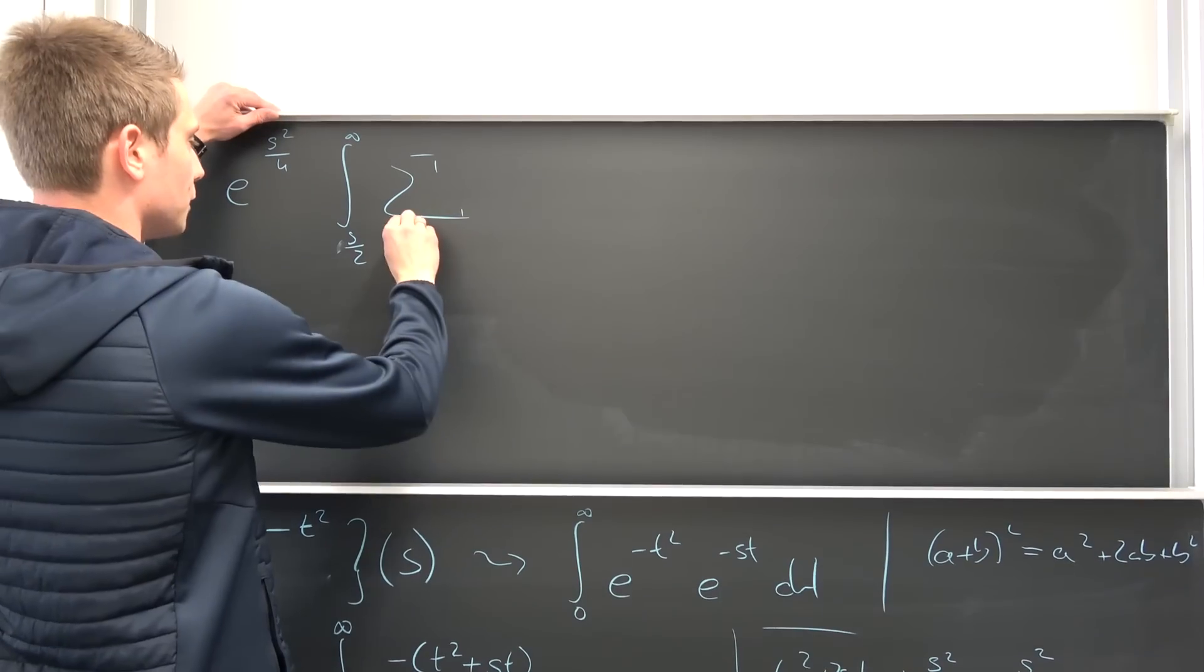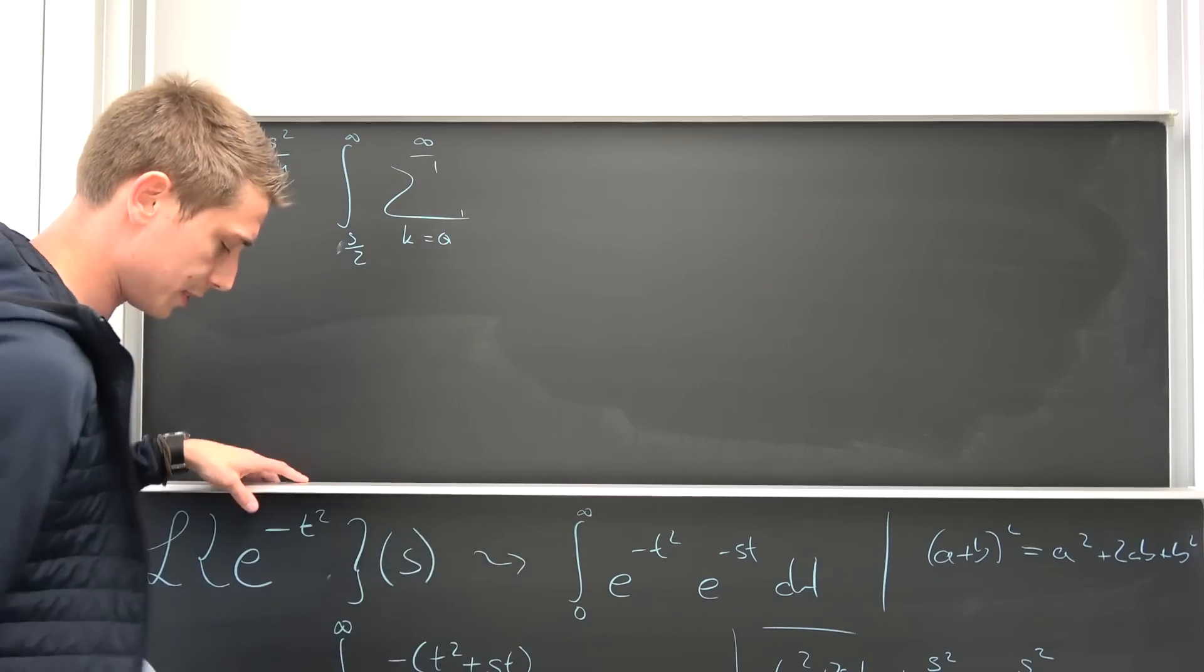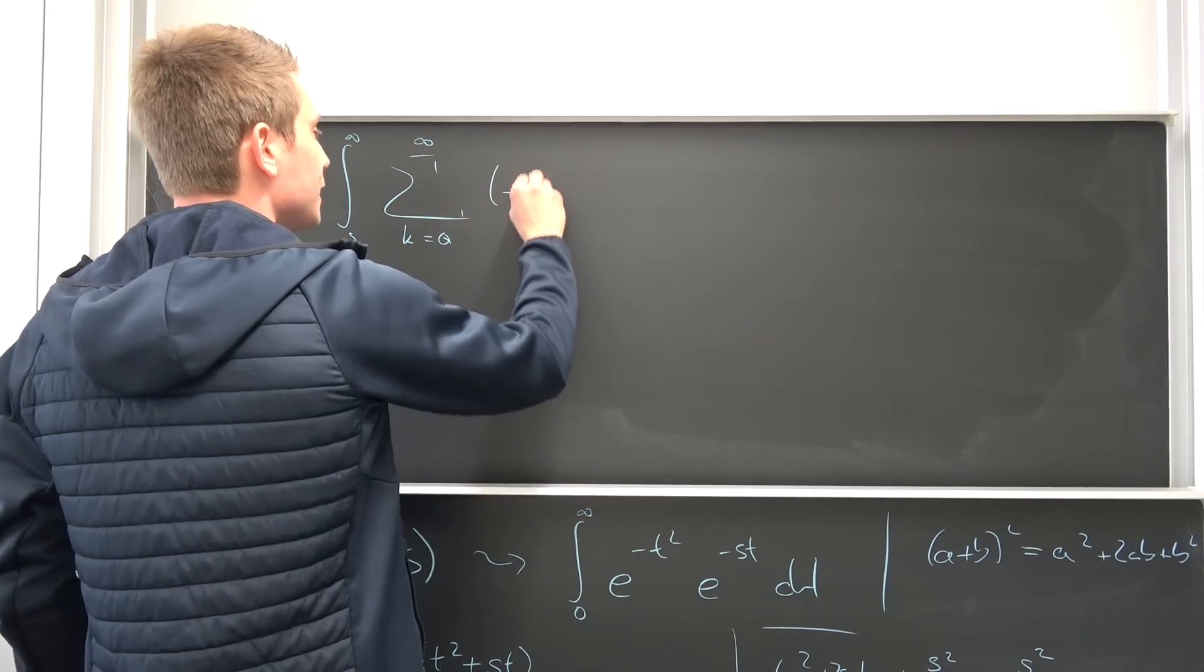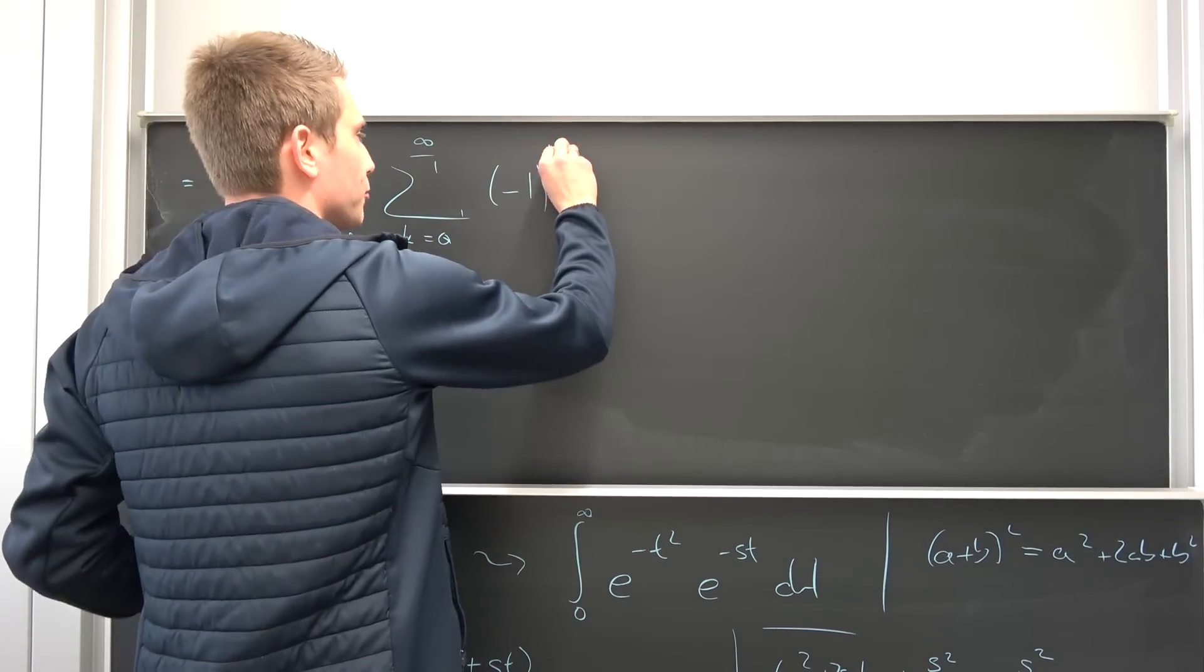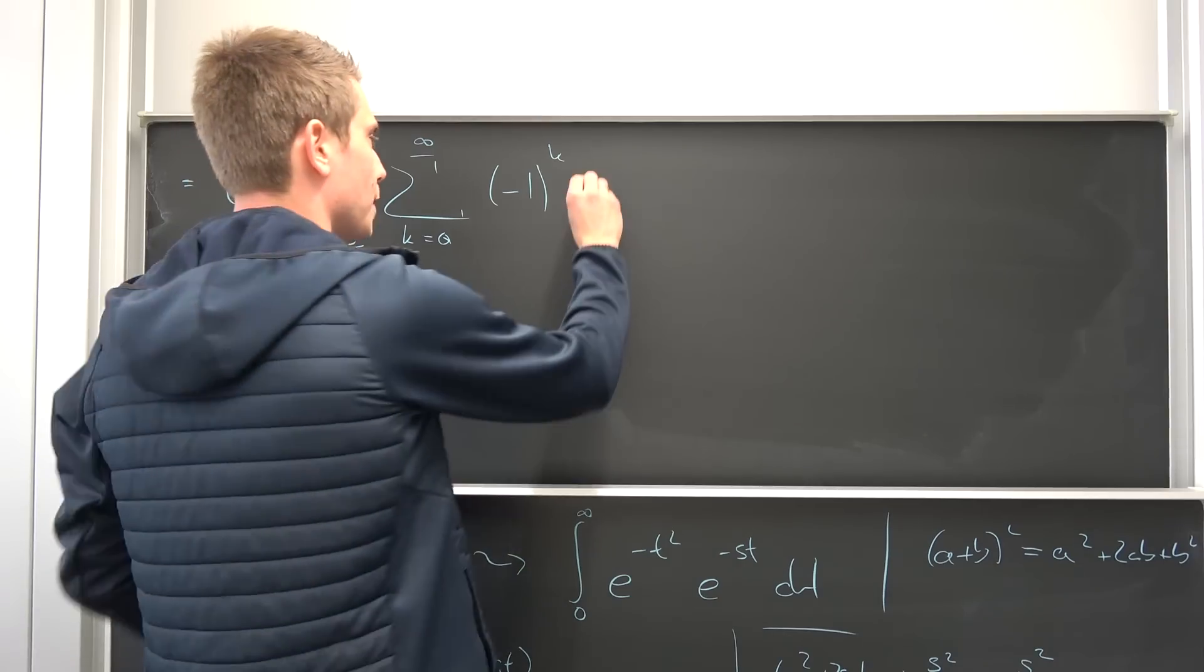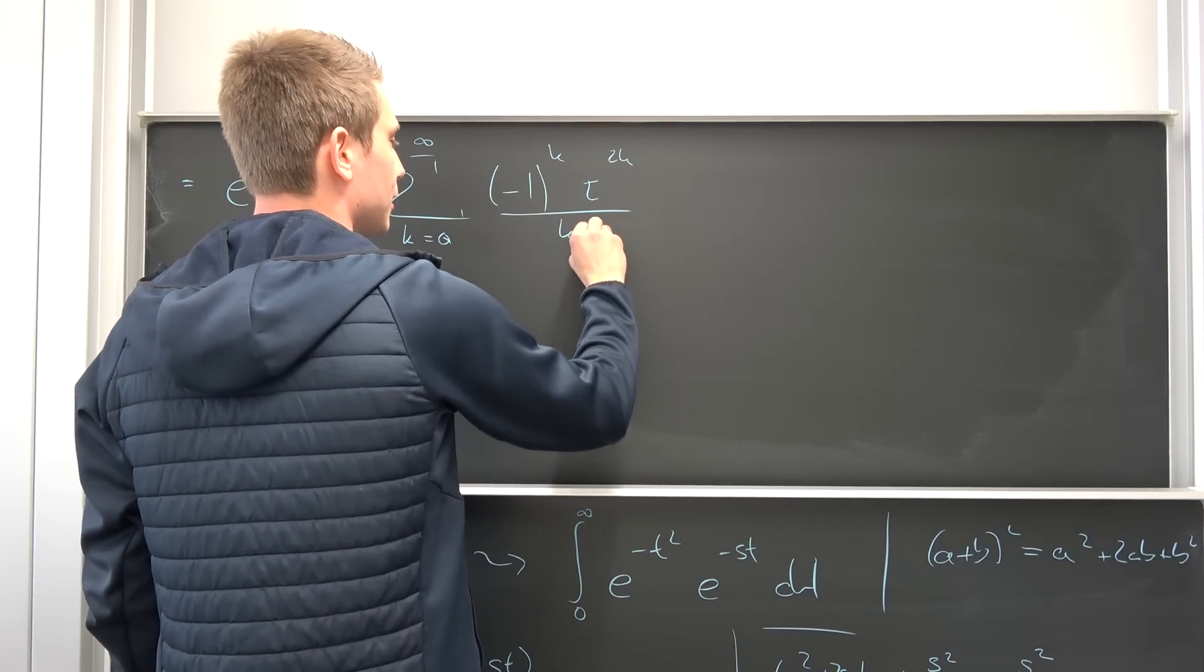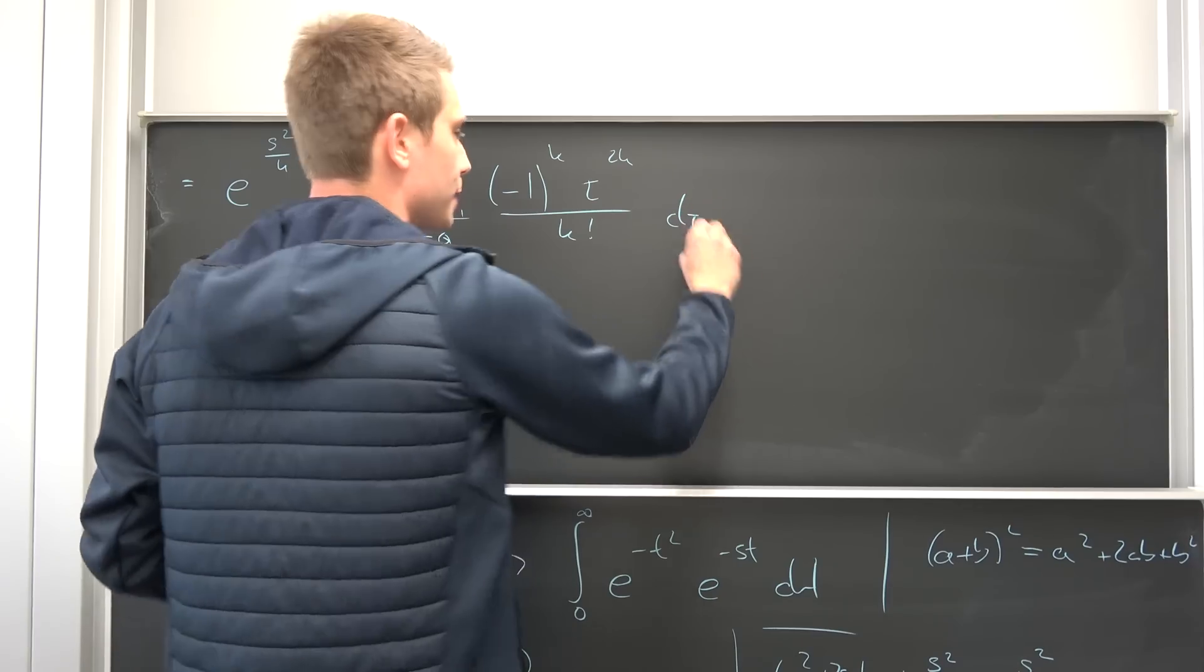So this thing as a Taylor series, we have talked about this several times. It's nothing but the infinity boy running from 0 to infinity. That's not a 6. That's supposed to be a 0 of, okay, negative 1 to the kth power, okay, and then we are going to get tau squared to the kth power, which is nothing but tau to the 2k power over k factorial integrated with respect to tau.